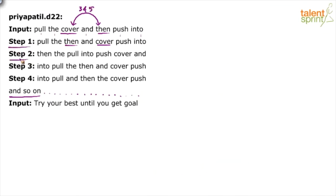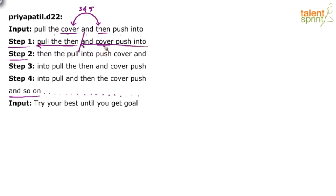In step 2 there are many changes. Then the pull — it looks like then and pull have been interchanged. Then 'and' has been completely moved. Into has come here, push has come here, cover has come here. What I see in step 2 upon close observation is that step 1 has been divided into two parts: first 3 words and last 4 words.